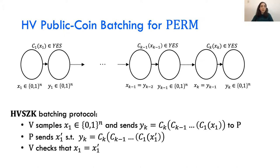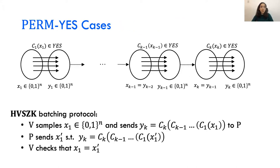To show this protocol is honest verifier ZK, we need completeness, soundness, and zero-knowledge. For completeness and zero-knowledge, all circuits are permutations. For completeness, permutations are invertible, so the prover can invert each circuit in turn to recover x1 from y_k. For zero-knowledge, we construct a simulator that samples x1 and computes y_k the same as the verifier, then sets x1' to be x1. This gives us perfect zero-knowledge.